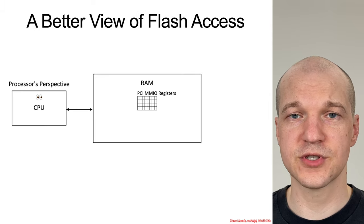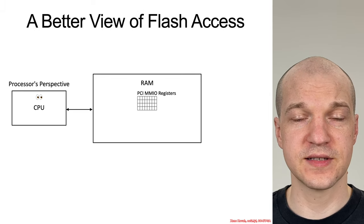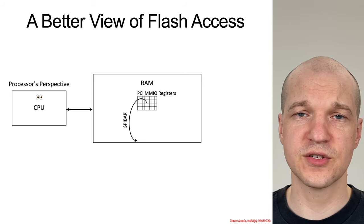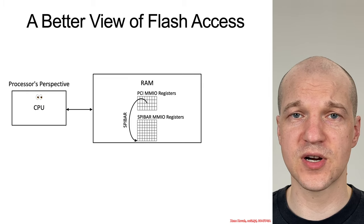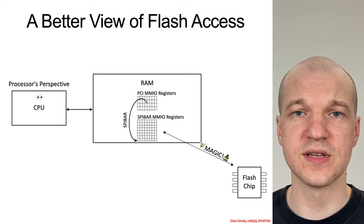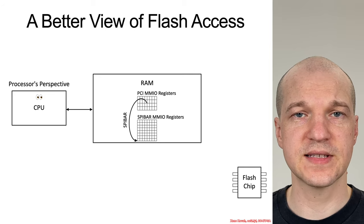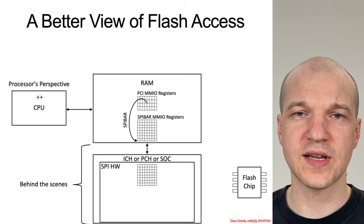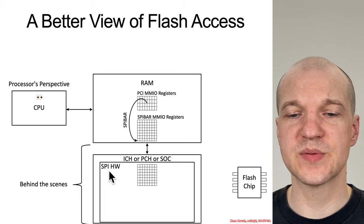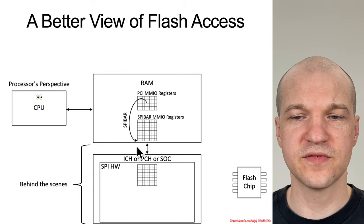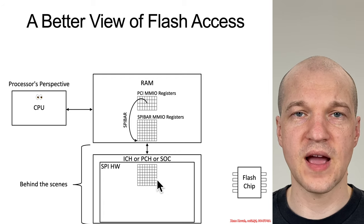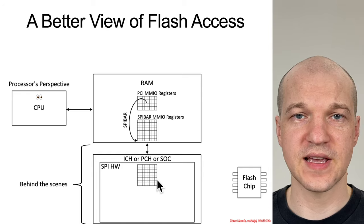A slightly less magical version would be to recognize that there exists some PCI config address space, and that's going to have some sort of pointer to some other registers, which we'll refer to as the SpyBar Memory Mapped I/O. That will give you your magical access to the SPI Flash memory. The even less magical view is that there is something like a PCH, ICH, or a built-in to the SOC — some SPI hardware sub-component — and all of the accesses to these SpyBar Memory Mapped I/O registers are really mapping to registers inside of the SPI hardware.